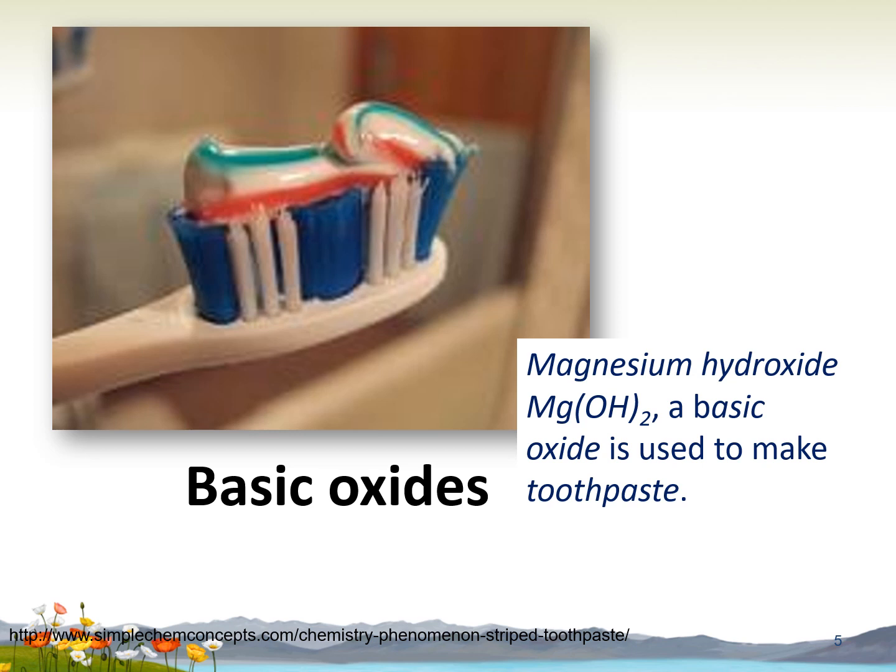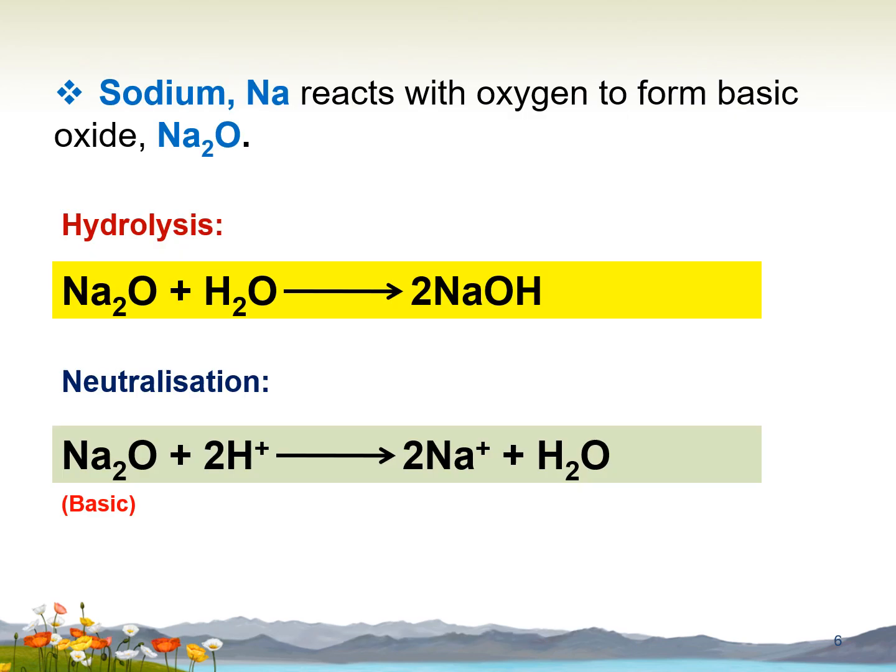Sodium burns in oxygen to form basic oxide with formula Na₂O. To write the hydrolysis equation, we react the oxide of sodium with water. The equation for the hydrolysis will be Na₂O plus H₂O produces 2 NaOH, which is sodium hydroxide. For the neutralization reaction, because sodium oxide is a basic oxide, it can react with any acid, for example HCl or H₂SO₄, to produce Na⁺ and H₂O.